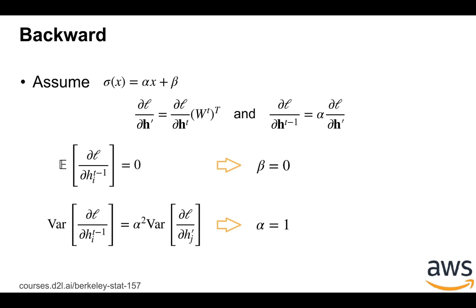And so similarly, we know the expectation is always zero, so we get β = 0, and the variance of the input is actually α² of the variance of the gradient function with respect to the input of the activation function. Again, we have α equal to one.